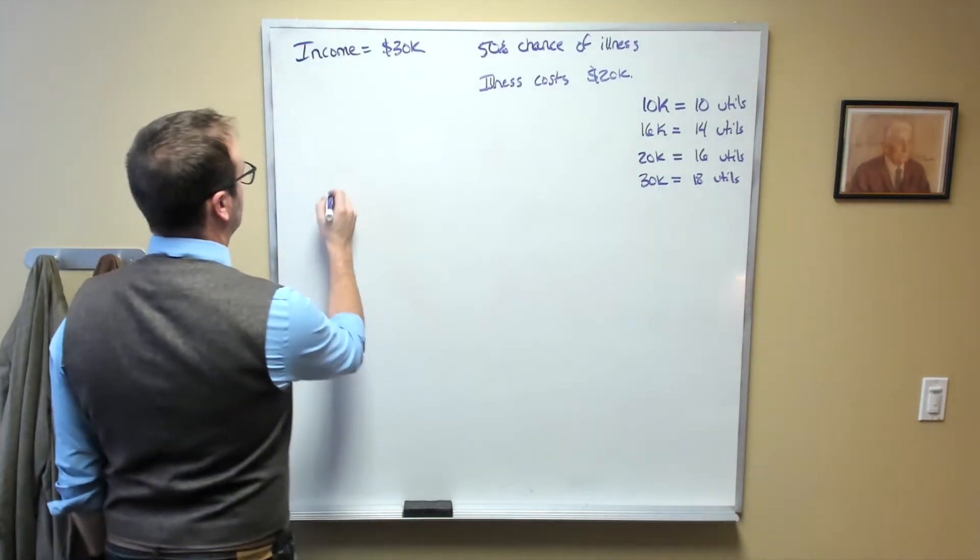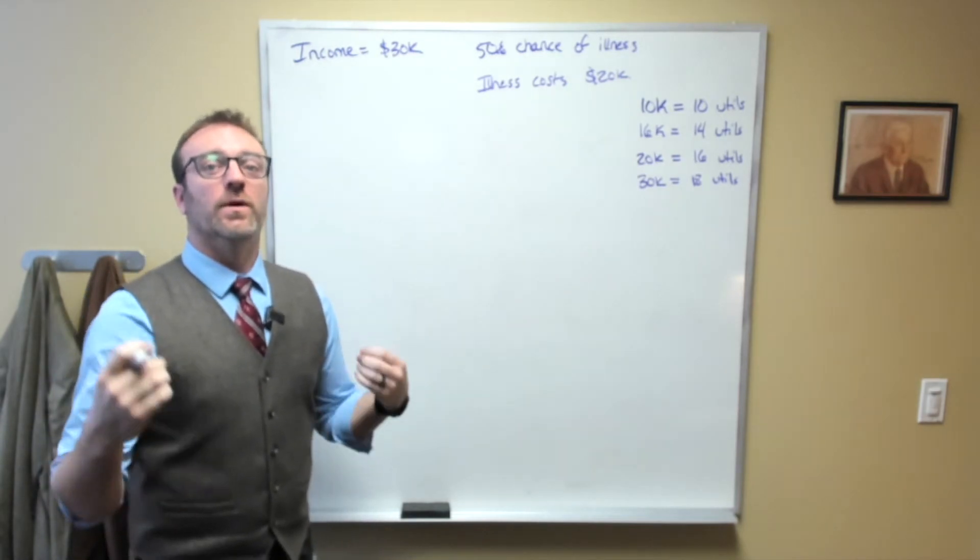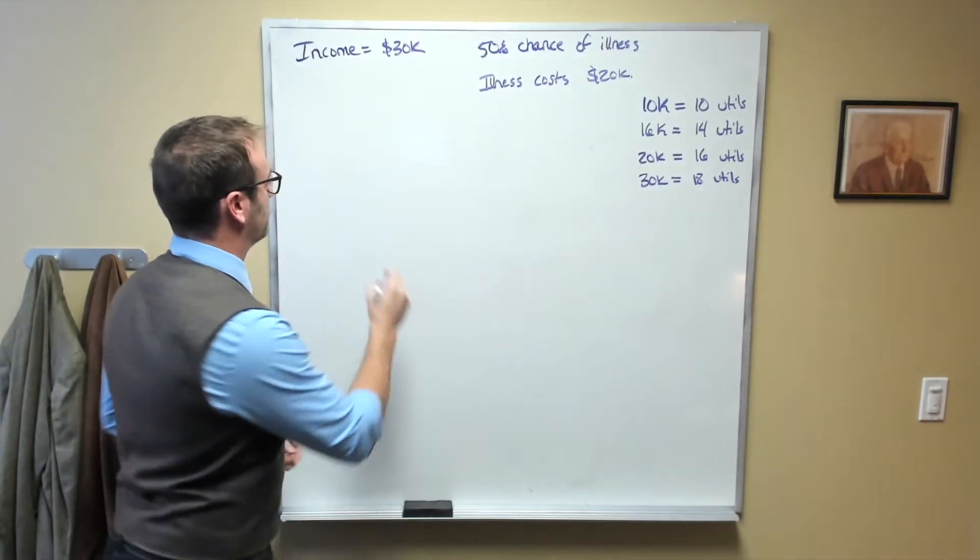So what we would do is we take the probability of their illness times the utility of their income when they're sick. So let's write that down, which would be 0.5 times their income if they are sick.